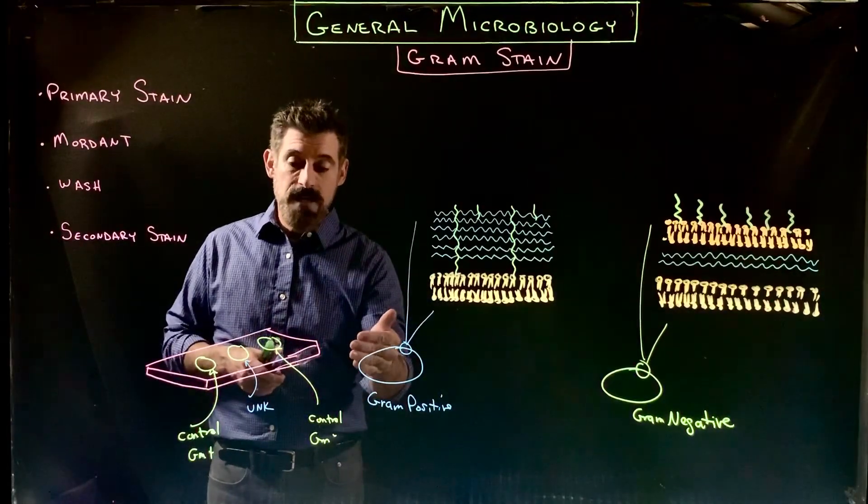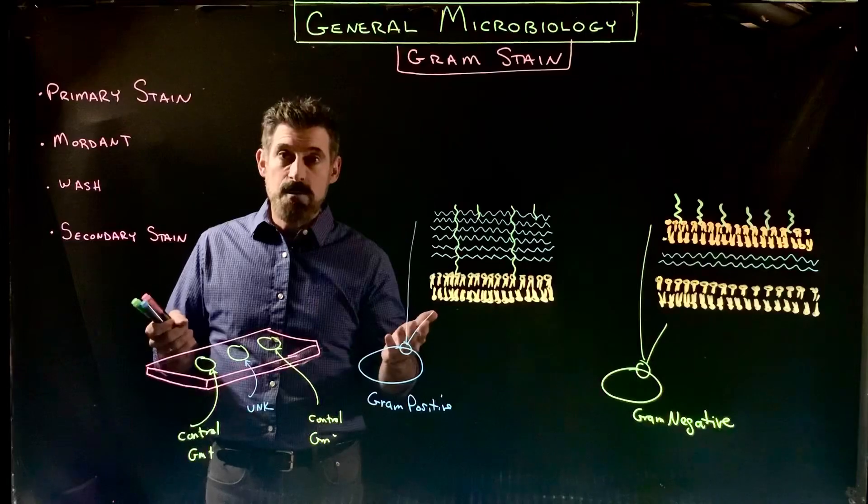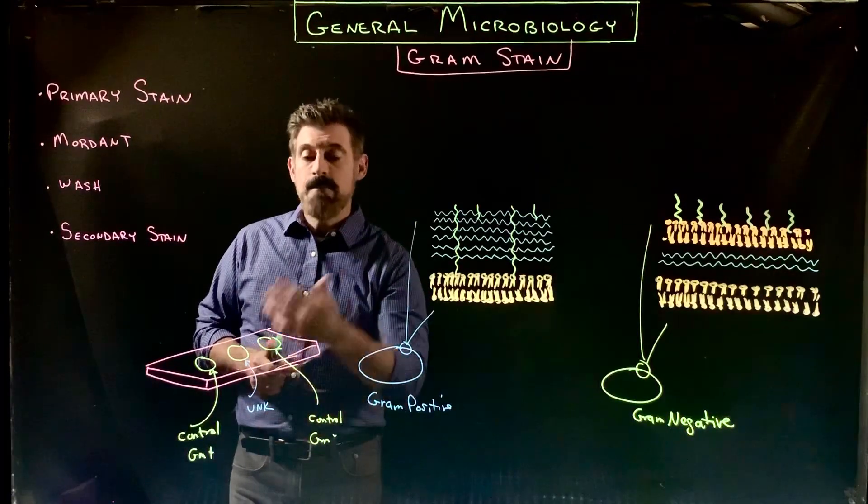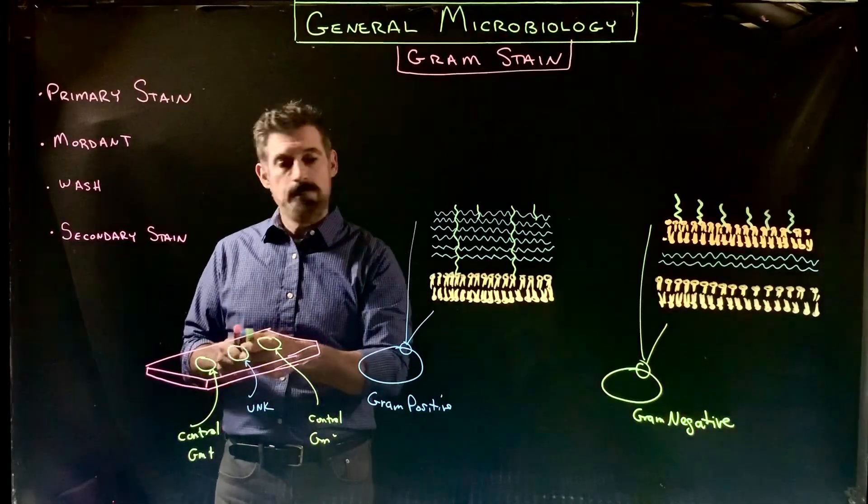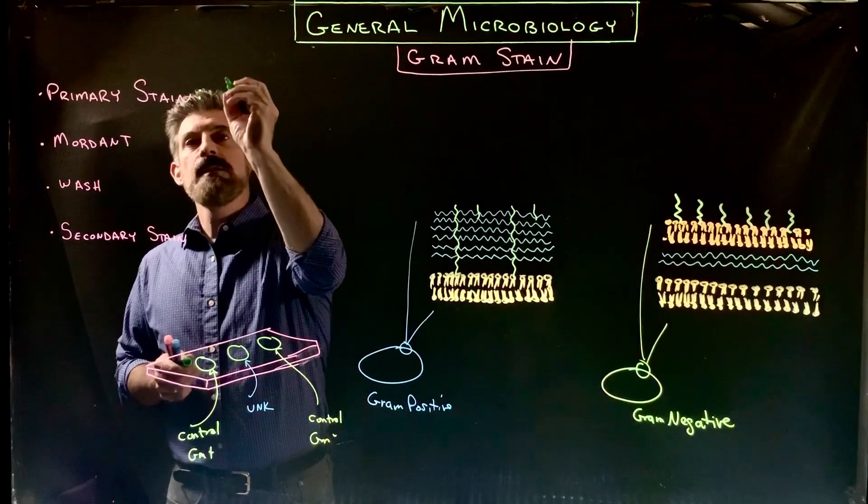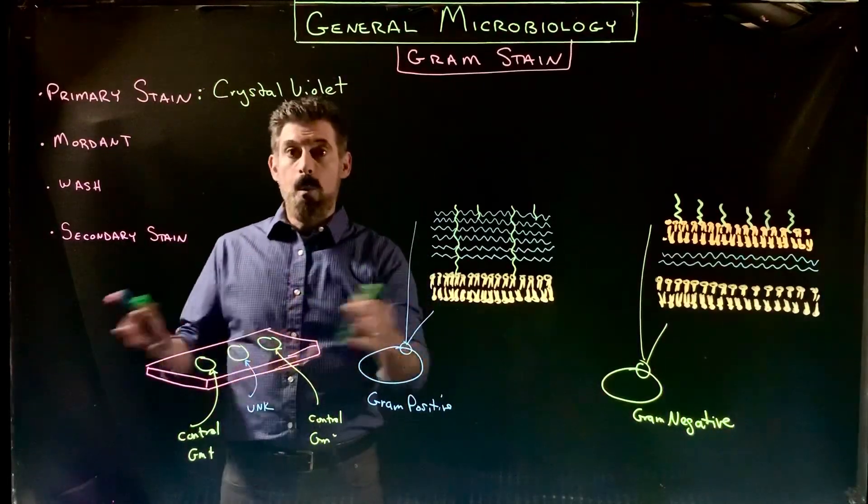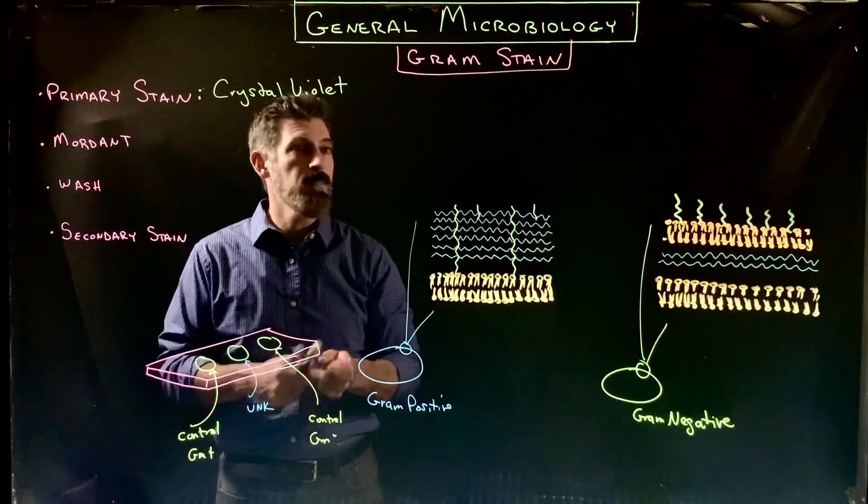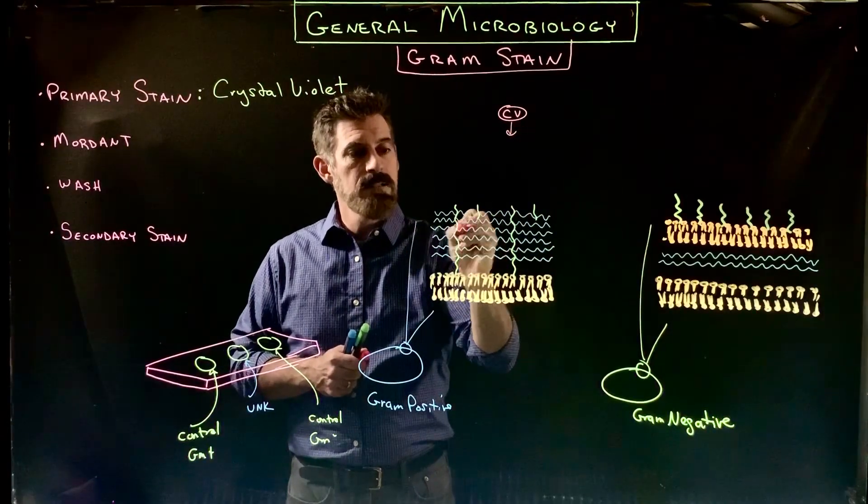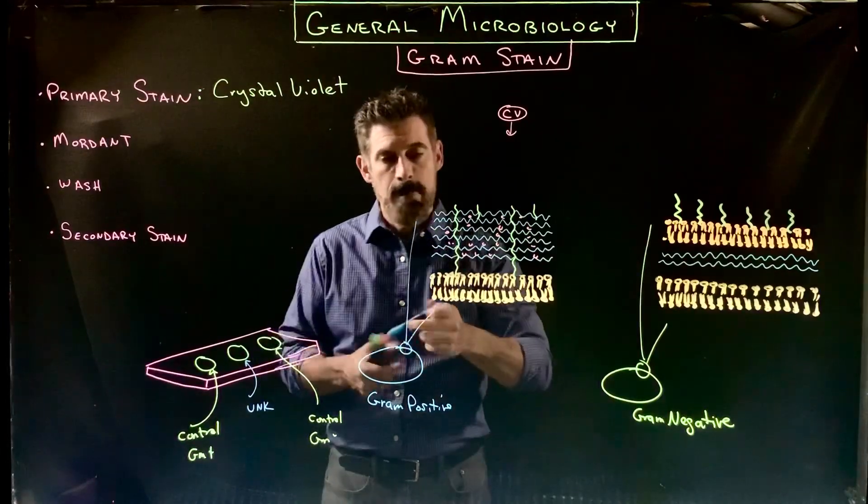The only way to know whether you actually did it correctly is to have control organisms on the slide that turn out the way that you expect. You put them on there, let them air dry, heat fix, and then the primary stain is going to be crystal violet. Everything is washed with crystal violet, and the crystal violet dye particles will go into this layer here, which is our peptidoglycan layer.